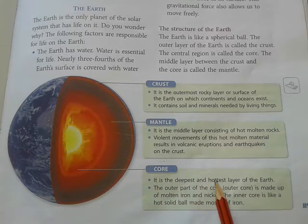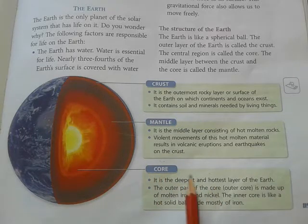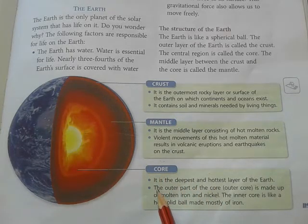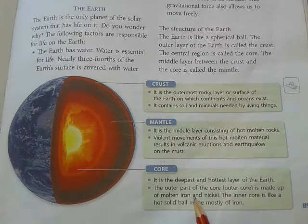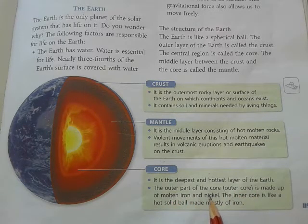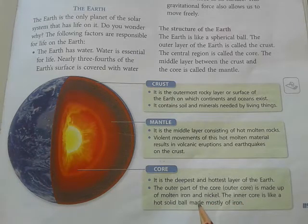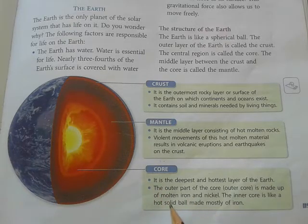The core is the deepest and hottest layer of the Earth. The outer part of the core is made of molten iron and nickel. The inner core is like a hot solid ball made mostly of iron.